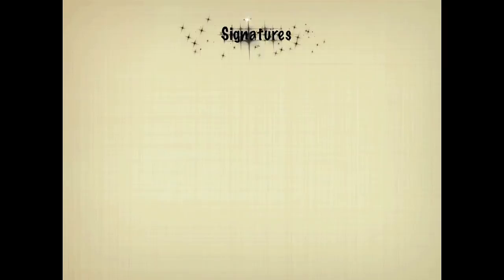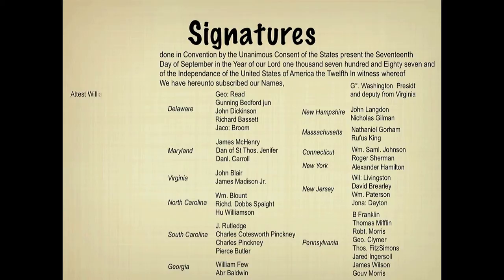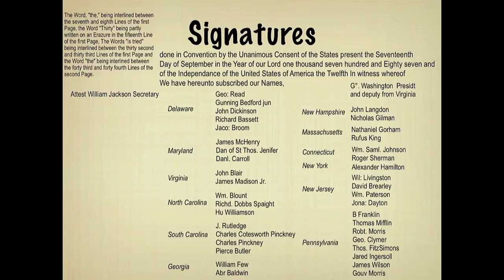There is a passage below Article 7, followed by the signatures of 39 of the delegates. The Secretary of the Constitutional Convention also signed it. The names appear on the screen as they do in the Constitution. To the upper left of the signatures, there is a note clarifying how a few words appear in the document, since it was handwritten.